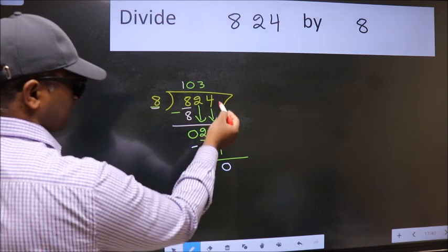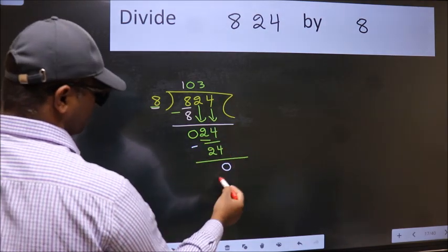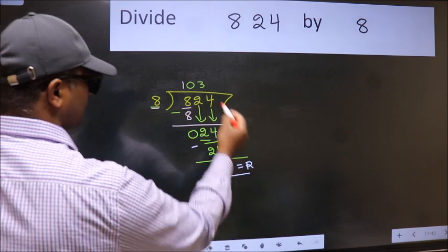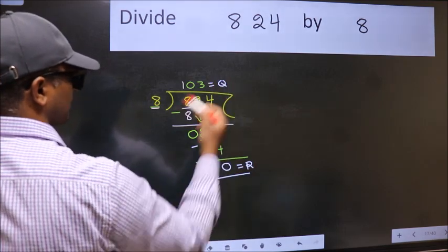No more numbers to bring down. So we stop here. This is our remainder and this is our quotient.